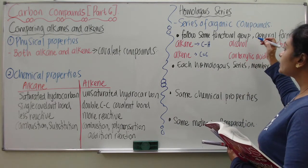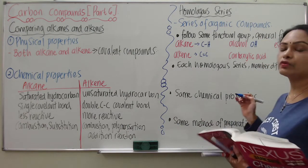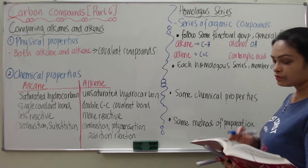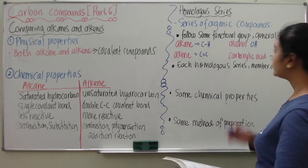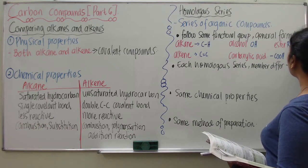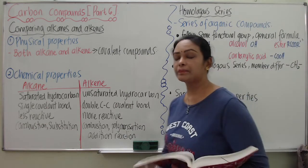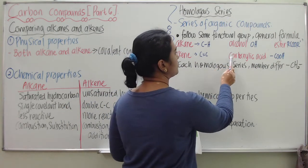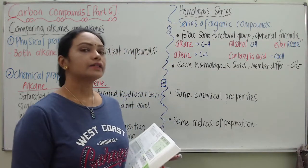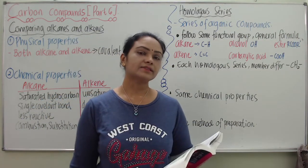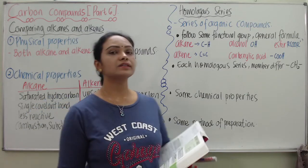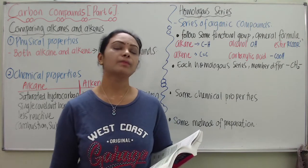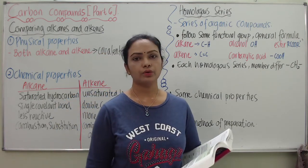Alcohol has the functional group OH — we call it hydroxyl. Carboxylic acid has COOH, and for ester it will be RCOOR. Don't worry — students don't need to worry much about alcohol, carboxylic acid, and ester right now, because these will be discussed separately in our next upcoming parts of the video.